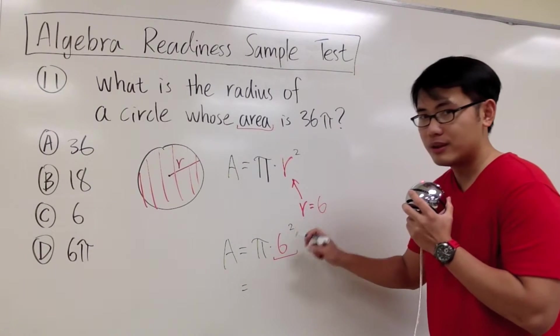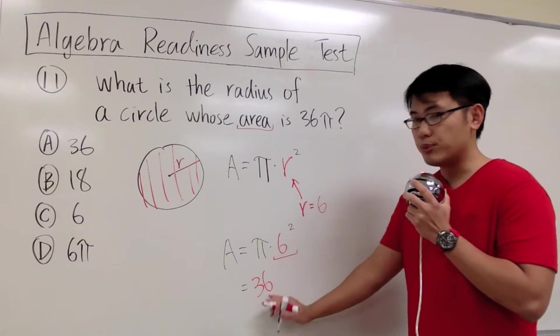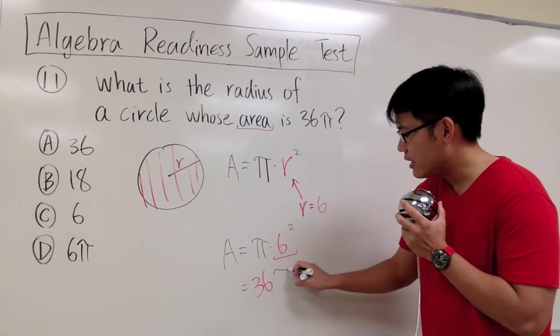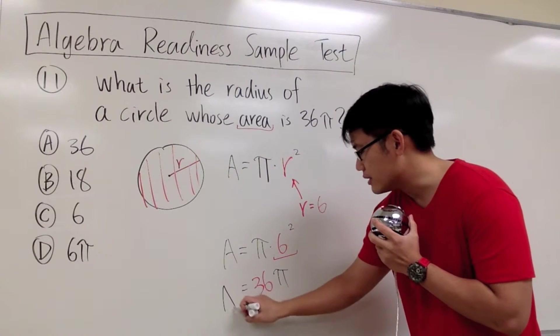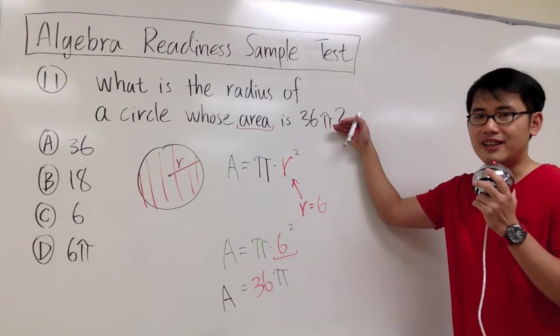And 6 to the second power, 6 times 6, that will give us 36. We usually like to put the number down first, and then the constant π afterward. And as you can see, A = 36π, that fits exactly the condition of the question.